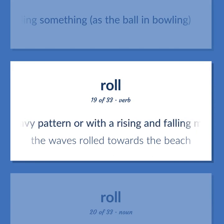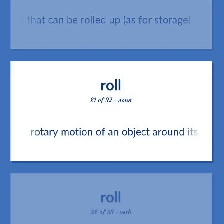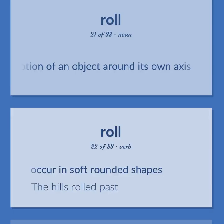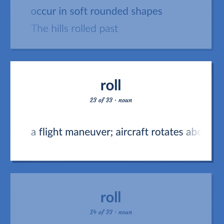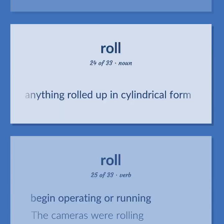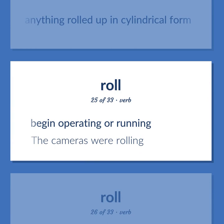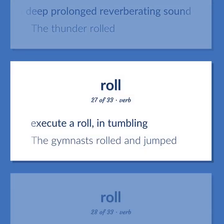ROLL (continued): Move in a wavy pattern or with a rising and falling motion — 'the waves rolled towards the beach.' A document that can be rolled up, as for storage. Rotary motion of an object around its own axis. Occur in soft rounded shapes — 'the hills rolled past.' A flight maneuver: aircraft rotates about its longitudinal axis without changing direction or losing altitude. Anything rolled up in cylindrical form. Begin operating or running — 'the cameras were rolling.' Emit, produce, or utter with a deep prolonged reverberating sound — 'the thunder rolled.' Execute a roll in tumbling — 'the gymnasts rolled and jumped.'